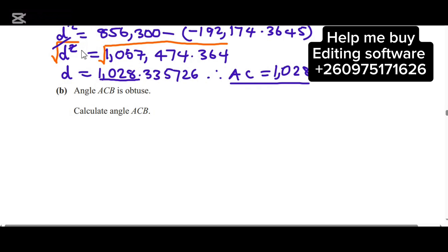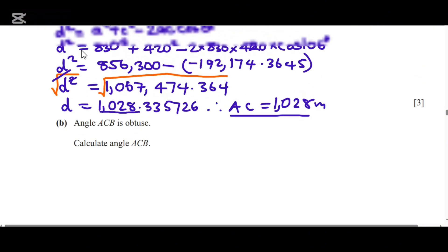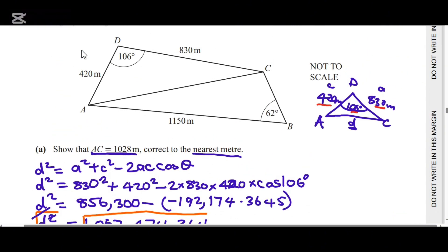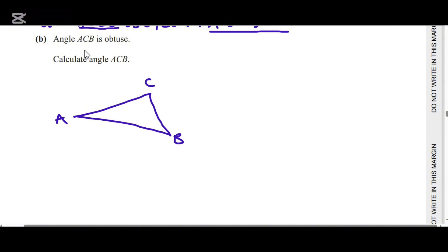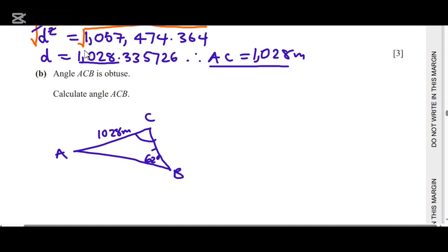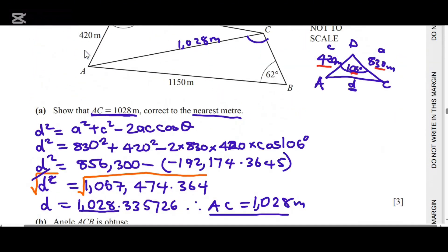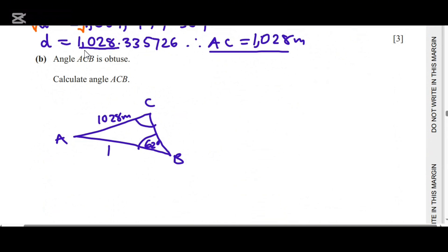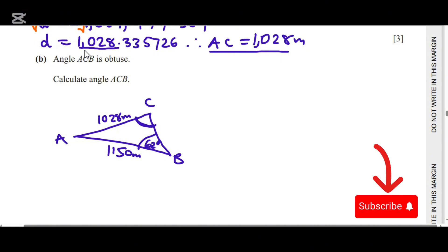Part B says angle ACB is obtuse — calculate angle ACB. So we know that AC is now 1028 meters. I'm going to draw triangle ACB. They want us to find angle ACB. We know this side is 1028 meters, the angle at B is 62 degrees, and AB is 1150 meters.